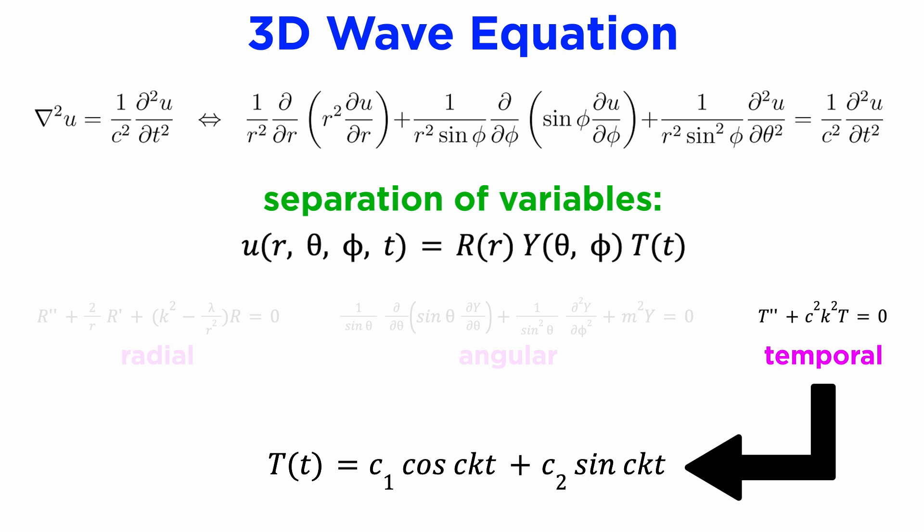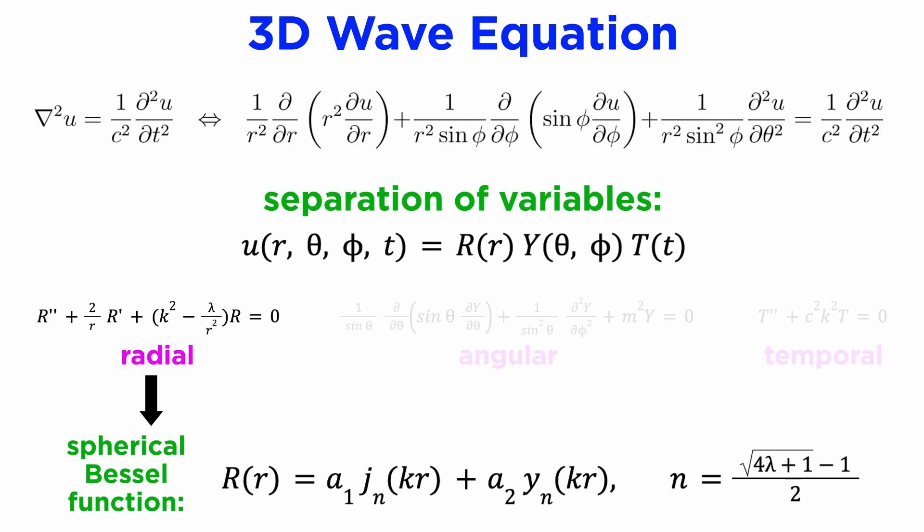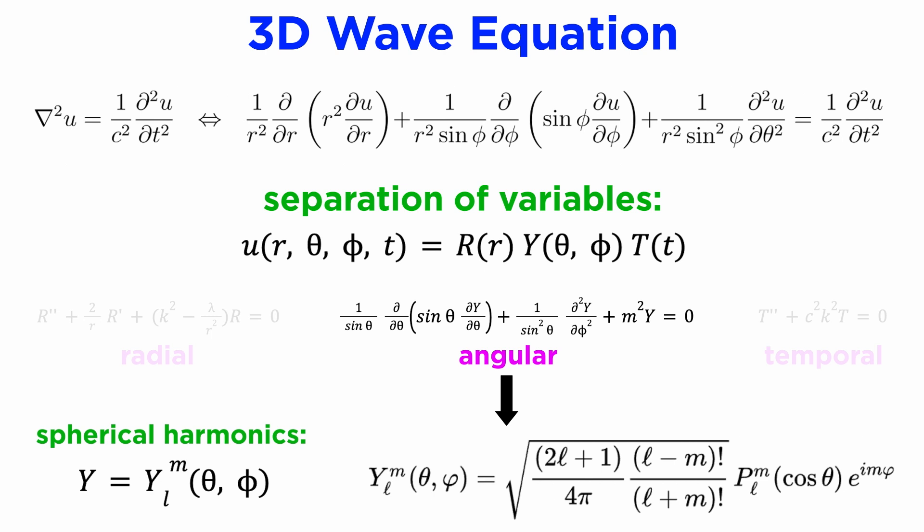The temporal component is easy to solve, and we will clearly get trigonometric functions. The radial component is a little trickier, and it can only be solved with a special function called the spherical Bessel function. The angular component is in itself a PDE.